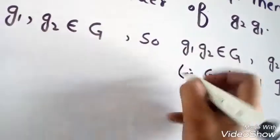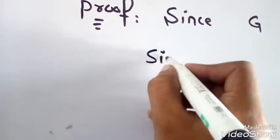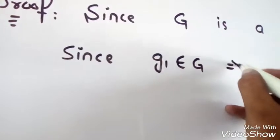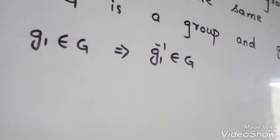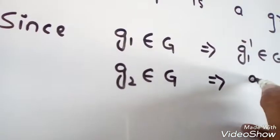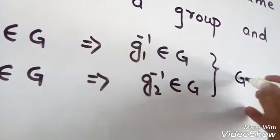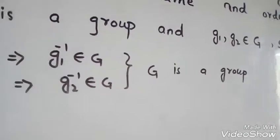Since G is a group, G1·G2 and G2·G1 are elements of G. G2 is an element of G, so its inverse will also be in G. Why? Because G is a group, and if G is a group, then every element's inverse is also in the group.